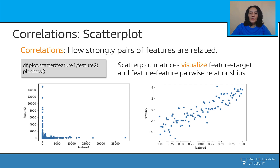The first scatter plot here shows no correlation between the features considered, while the second scatter plot shows two features that are highly correlated — in fact, positively correlated. That means when one feature increases, the other one increases as well. We can also have negatively correlated features, where when one feature increases, the other one decreases, though that is not shown here.